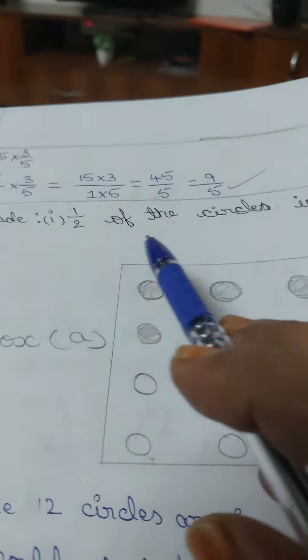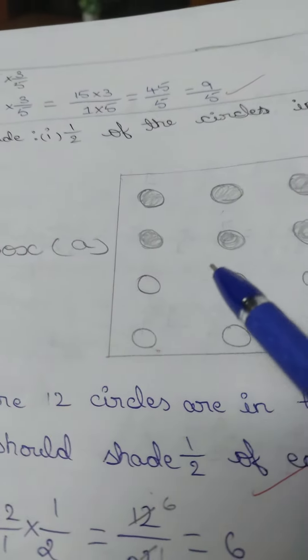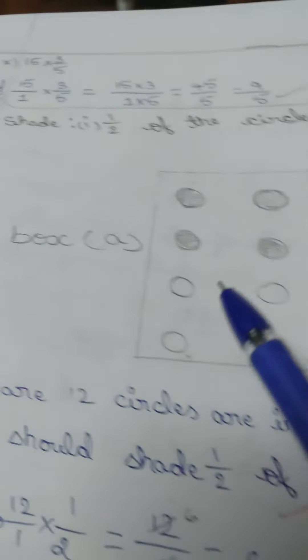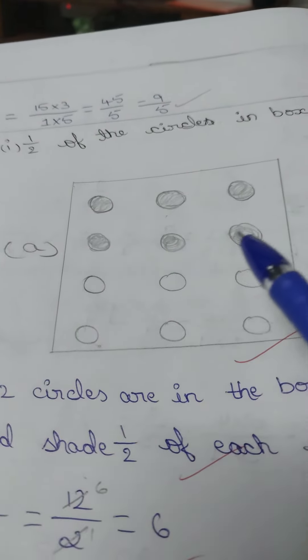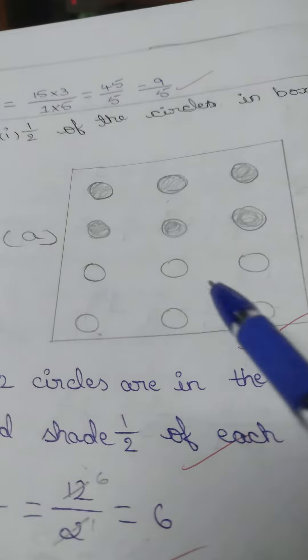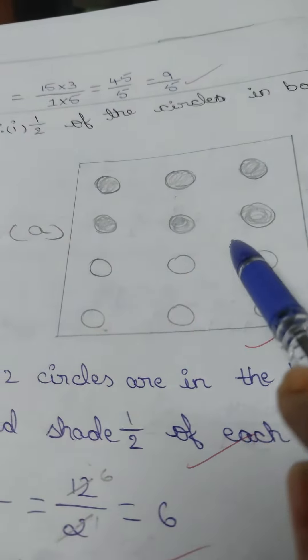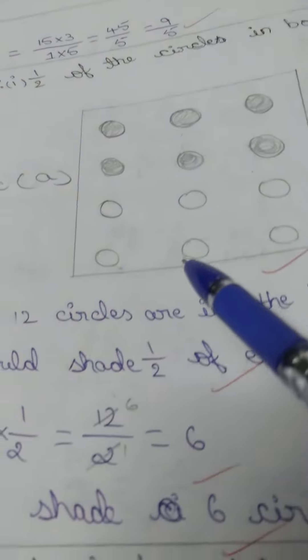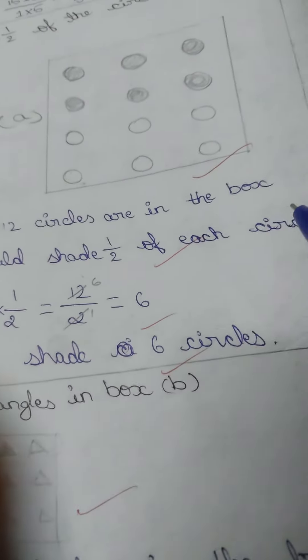In Box A, half of the circles are equal to 4 lines. There are 12 circles in the box.